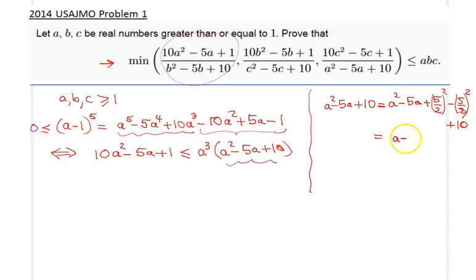And then we have -25/4 + 10, so we have -25/4 + 40/4, which gives 15/4. So plus 15/4, and that expression is certainly greater than or equal to 0 because this is greater than or equal to 0 and this one is greater than 0.